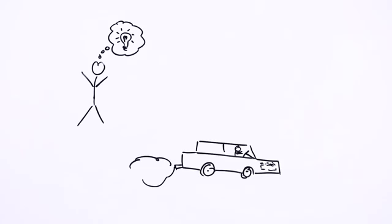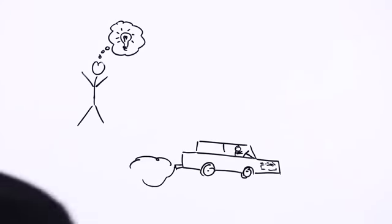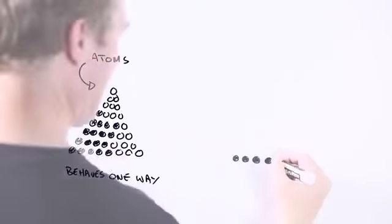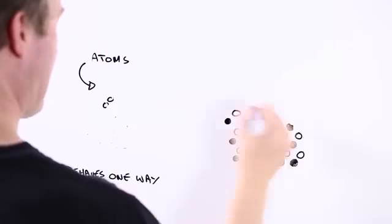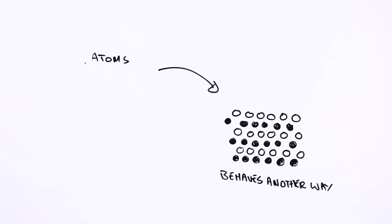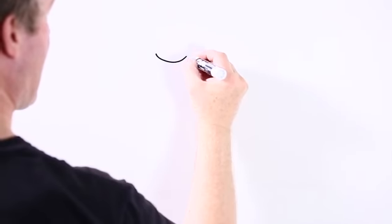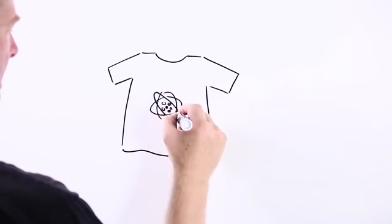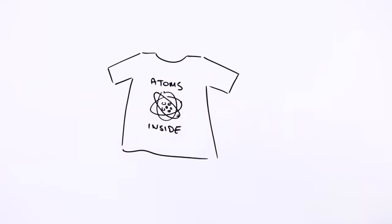Of course, atoms are a bit smaller than the wheels on a car, but the same idea holds. How the different atoms in something are arranged can affect things like how strong or how weak it is, or if it conducts electricity, or if you can see through it, or even what it feels like. In fact, pretty much anything that the stuff around you does, it does because of how all the different atoms it's made of are put together.